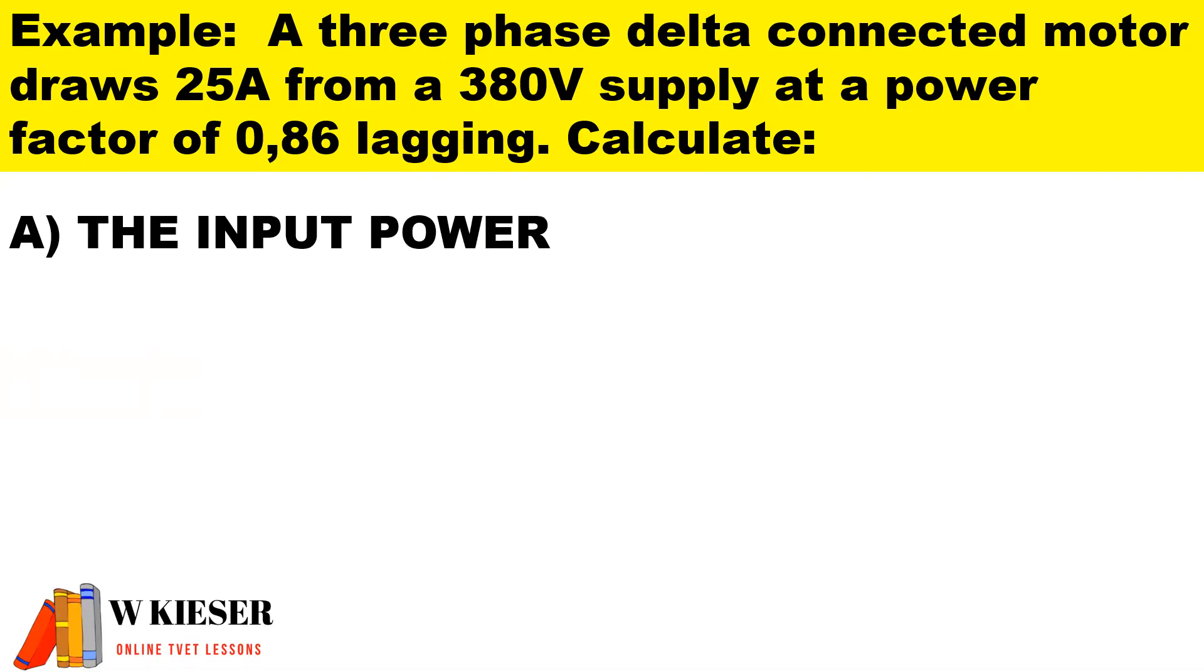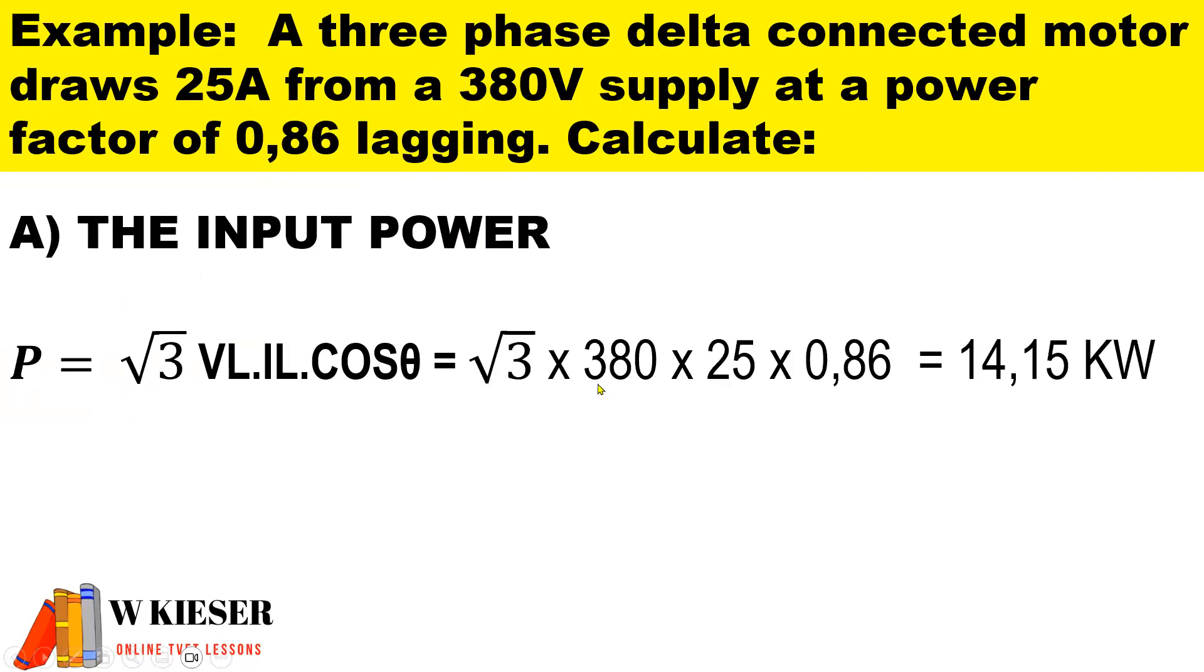To calculate the input power, the formula for power for a three phase circuit we multiply by square root 3. So therefore the line voltage is 380 volts, the line current is 25 amps, and the power factor is 0.86. This gives us 14.15 kilowatts.